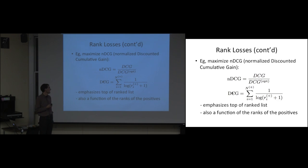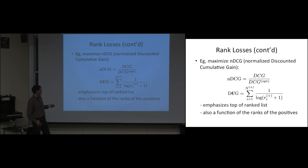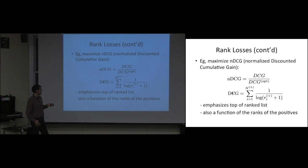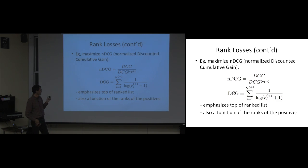Since AUC is a linear function of rank r, its derivative with respect to rank is just a constant — very simple. Another loss function is NDCG, which focuses more on the top of the ranked list: the weight for each item is larger when it's near the top. The weight is 1/log(rank), giving a much larger gradient for items near rank 1. We treat rank r as a continuous variable to take derivatives.